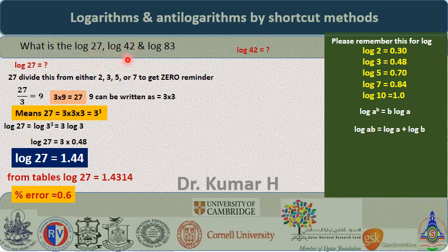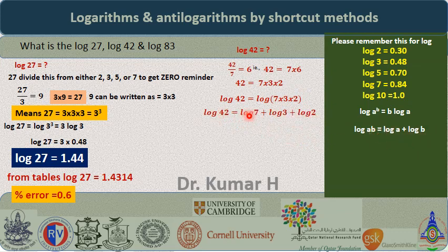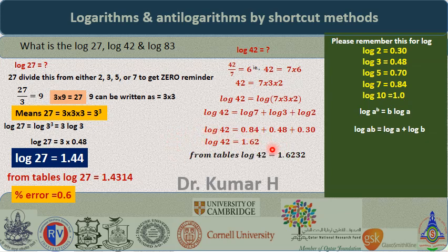Next, let us find log 42. Divide 42 by 7, which gives 6. So 42 = 7 × 6 = 7 × 3 × 2. Taking log on both sides: log 42 = log 7 + log 3 + log 2 = 0.84 + 0.48 + 0.30 = 1.62. The table gives 1.6232, so the percentage error is only 0.2%.